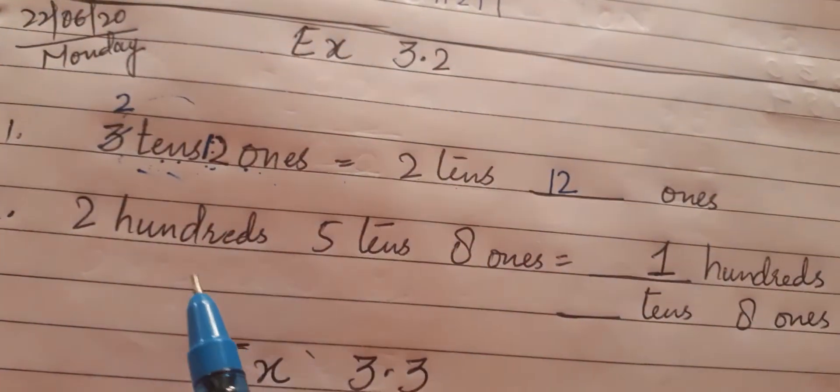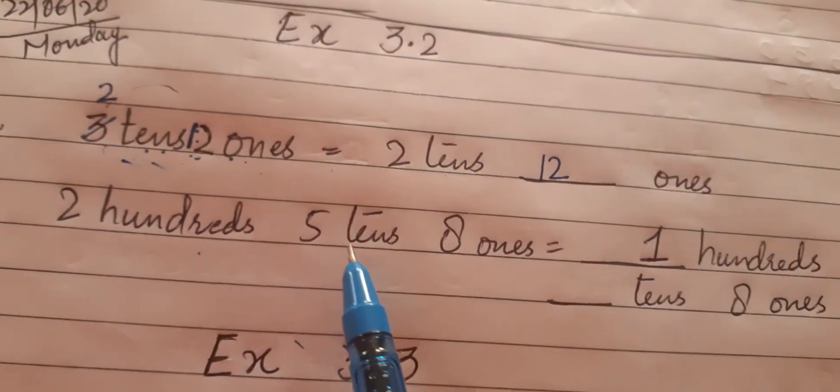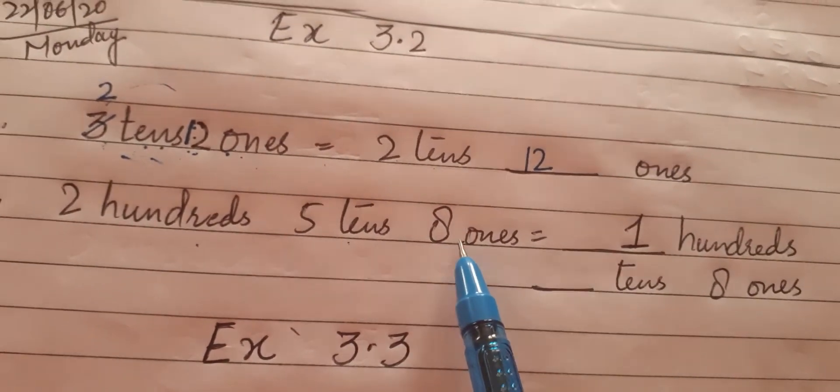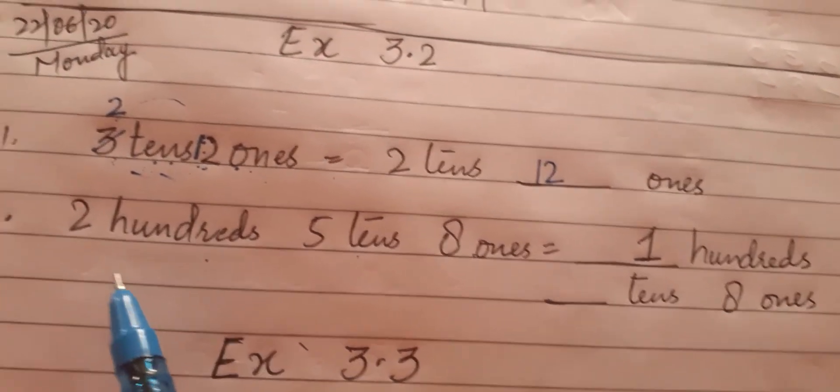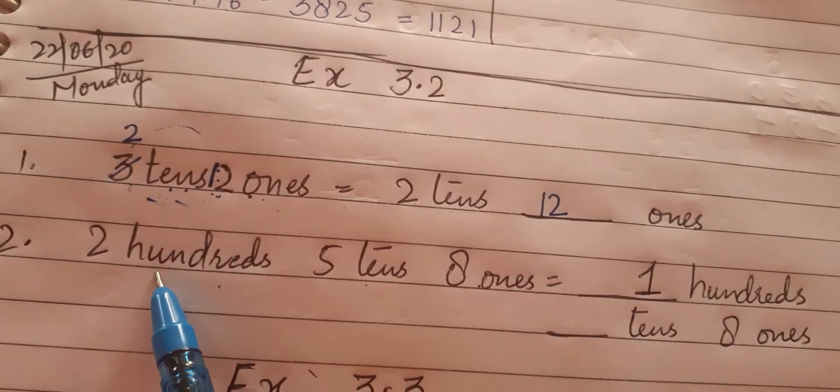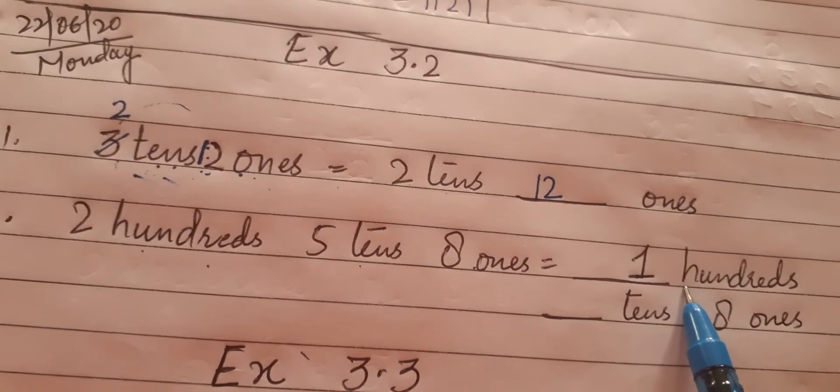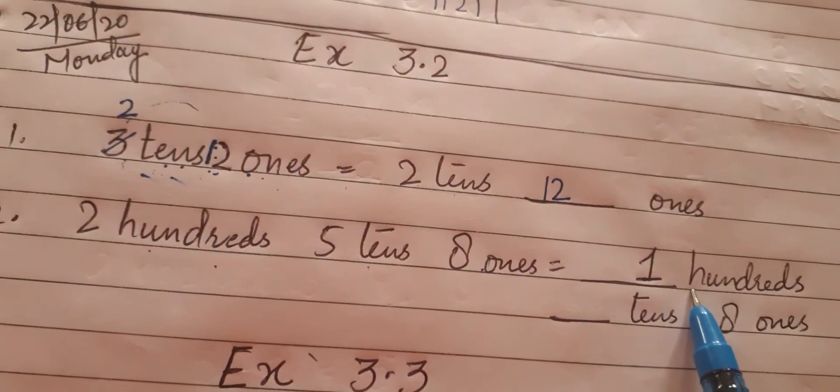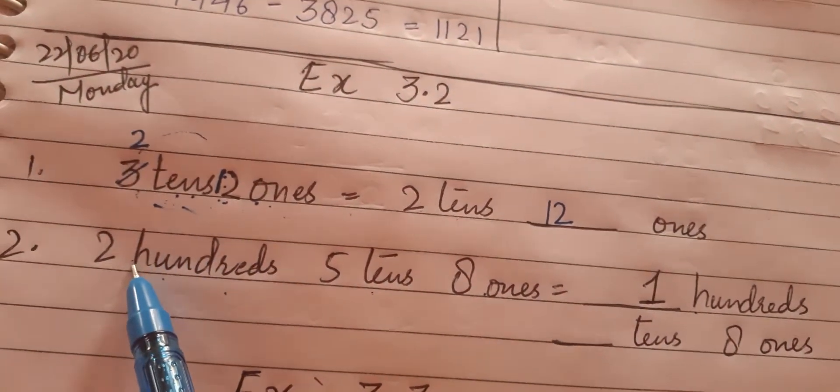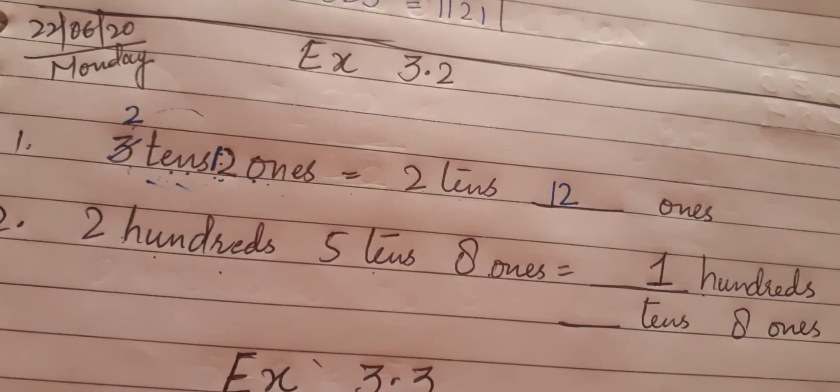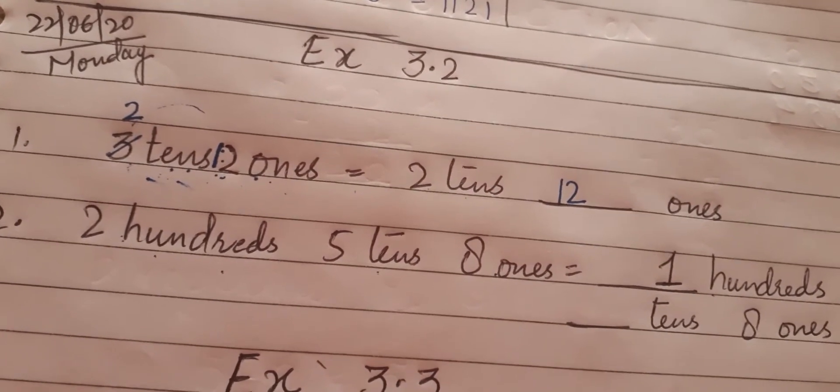Likewise, we have 2 hundreds, 5 tens, and 8 ones. Initially we had 2 hundreds, but 2 hundreds later become 1 hundred. So what happened to 200 is that 200 has become 100 less. So where has the 100 gone to?